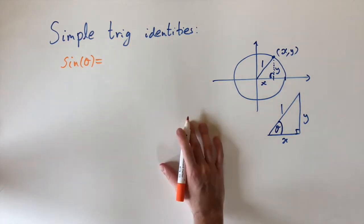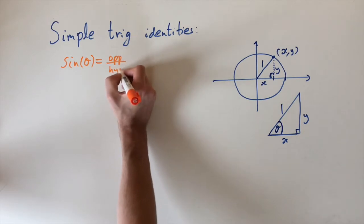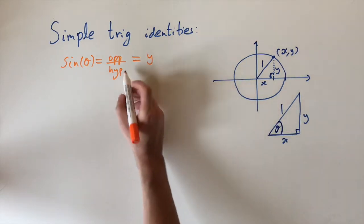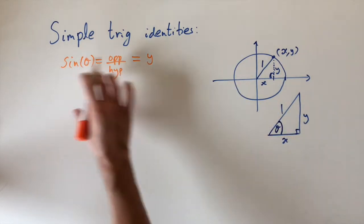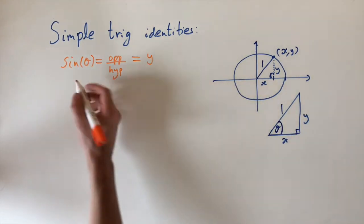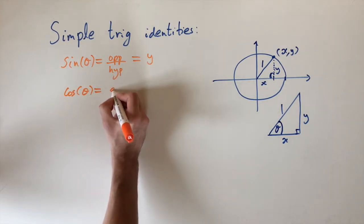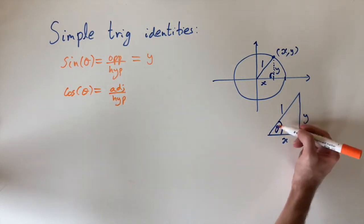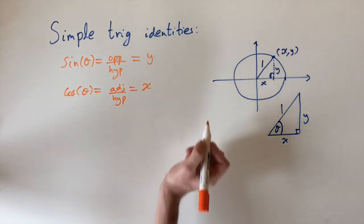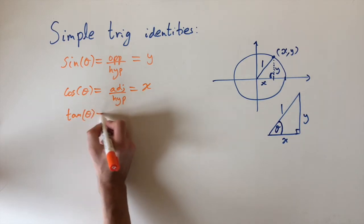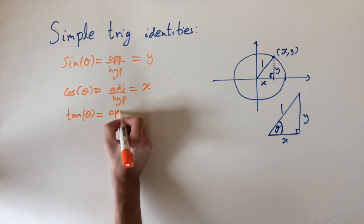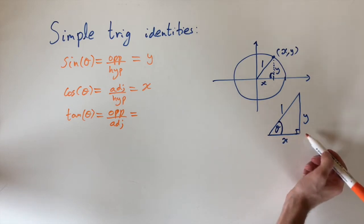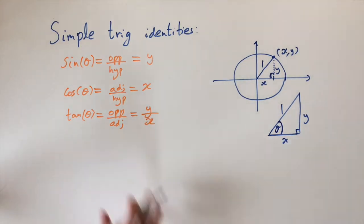Sine of theta is the opposite divided by the hypotenuse. The opposite length is y and the hypotenuse is one, so sine of theta equals y. Cosine of theta is the adjacent divided by the hypotenuse — the adjacent is x and the hypotenuse is one, so cosine of theta equals x. Tan of theta is the opposite divided by the adjacent, which is y divided by x.